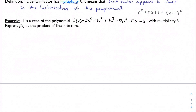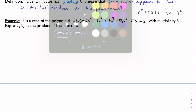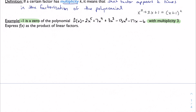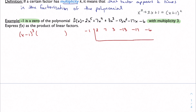Now let's use multiplicity in an example. We're told that −1 is a zero of the polynomial with multiplicity 3, and we need to express f(x) as a product of linear factors. If −1 is a zero with multiplicity 3, that means I'll have (x + 1)³ times some remaining factor. Instead of FOILing out or doing long division — which is cumbersome — it's faster to just do synthetic division three times to reduce this to something I can factor by hand.